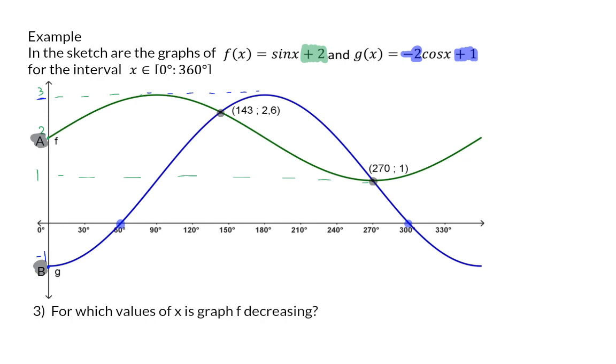Question 3: For which values of x is graph F decreasing? Decreasing means moving down from left to right, and that happens between the two turning points for graph F. The turning points are at 90 degrees and at 270 degrees, which means it will be all the x-values between 90 and 270.